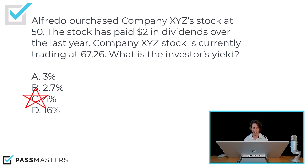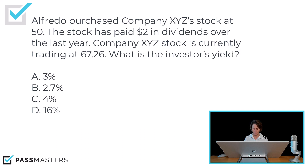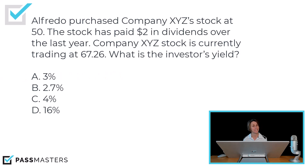Use your calculator if you don't trust me — sometimes I don't trust myself either. $2 divided by $50 is 0.04, so 4%. If it had asked for current yield, the formula would use different numbers — $2 divided by $67.26. That equals approximately 2.97%, so we'd round that up to 3%. That 3% would have been the answer if it had asked for current yield, but it didn't in this question.